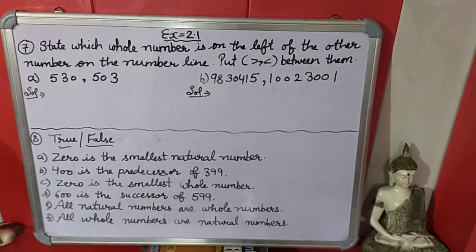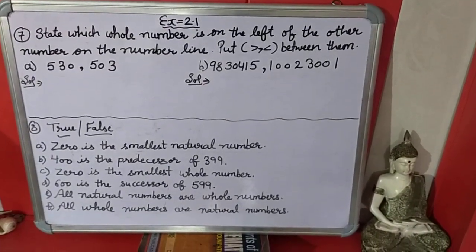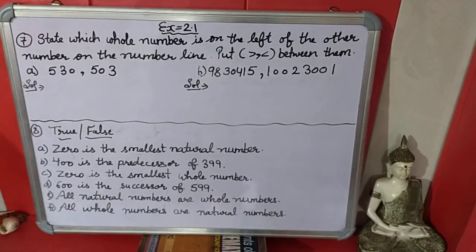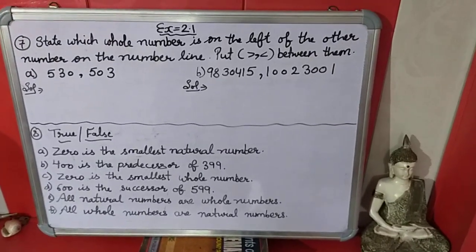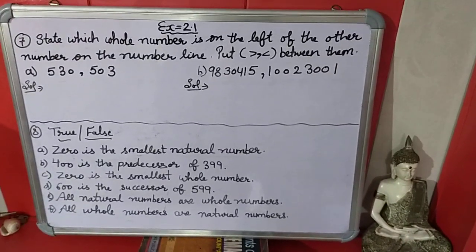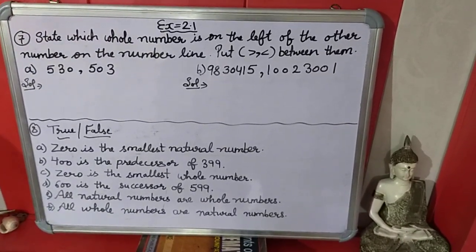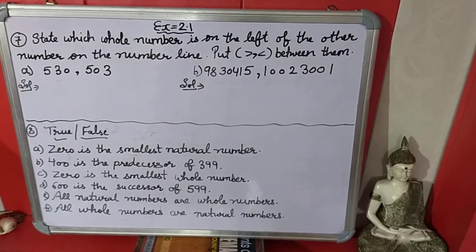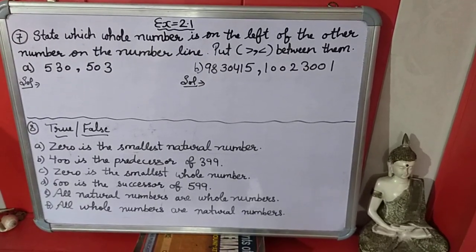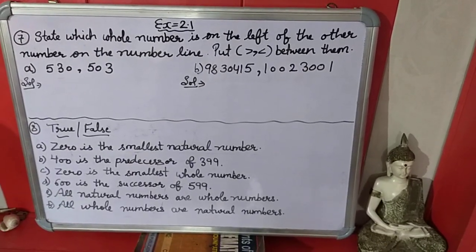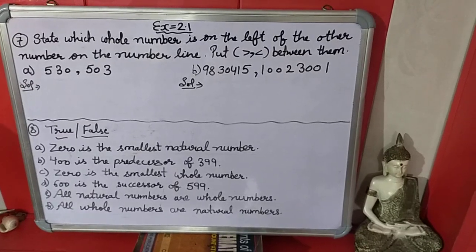Good morning students. In the last module we completed 6 questions of exercise 2.1. Now we will start with the 7th question. The 7th question says: state which whole number is on the left of the other number on the number line, and put the appropriate sign between them.